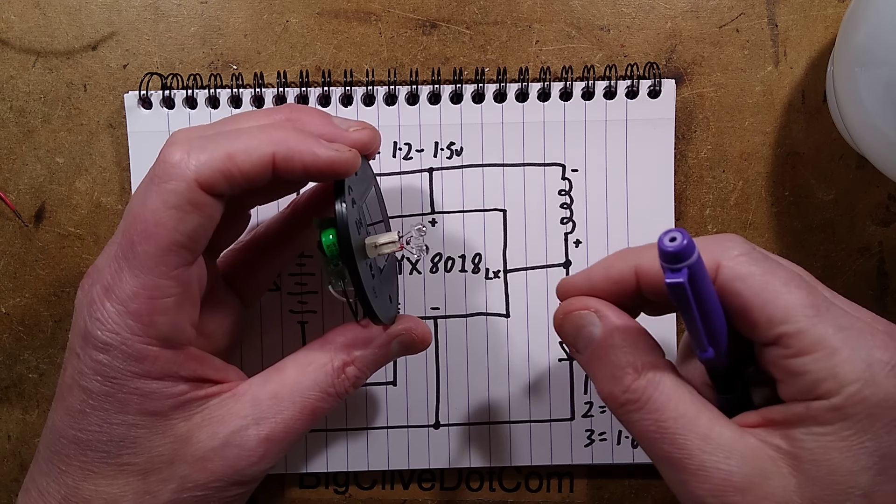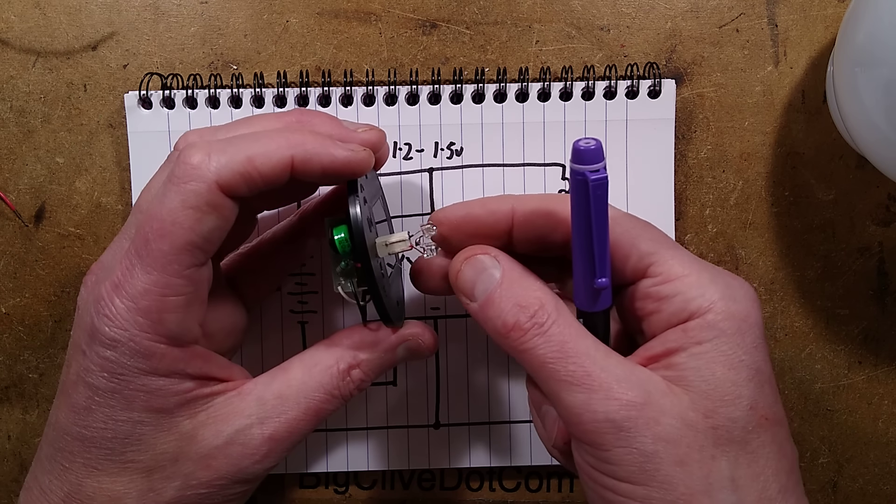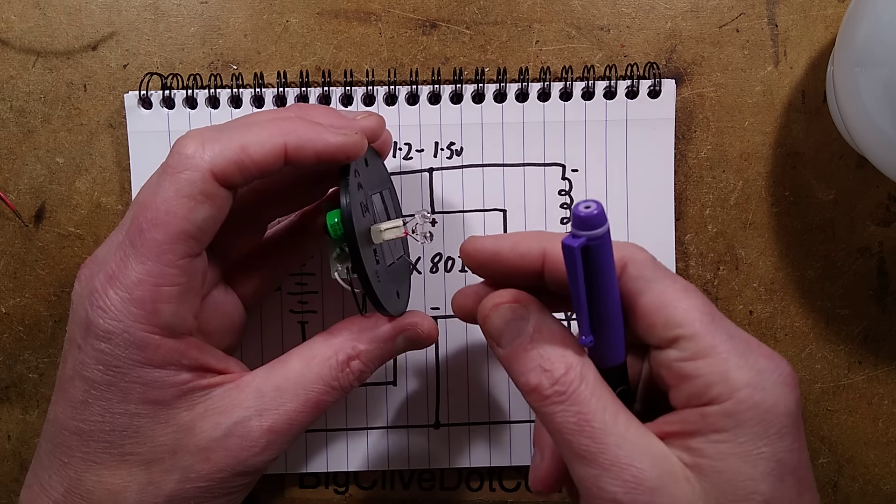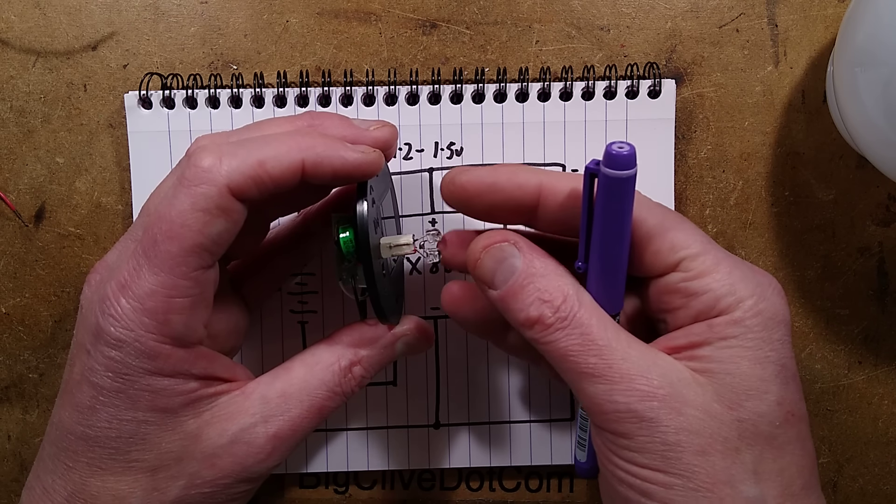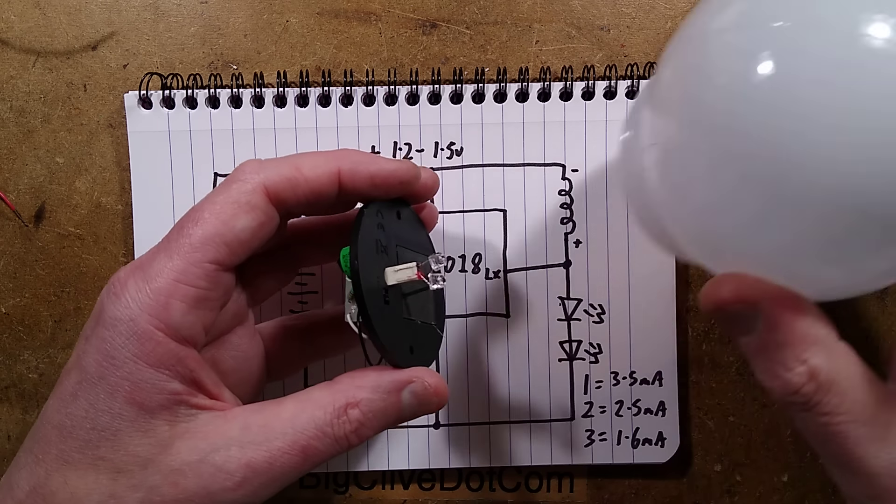And a good example of that would be using standard clear 5mm LEDs, but cutting the ends off with side cutters, so that actually creates a sort of crackled lens effect. And that would create a pattern inside of this.